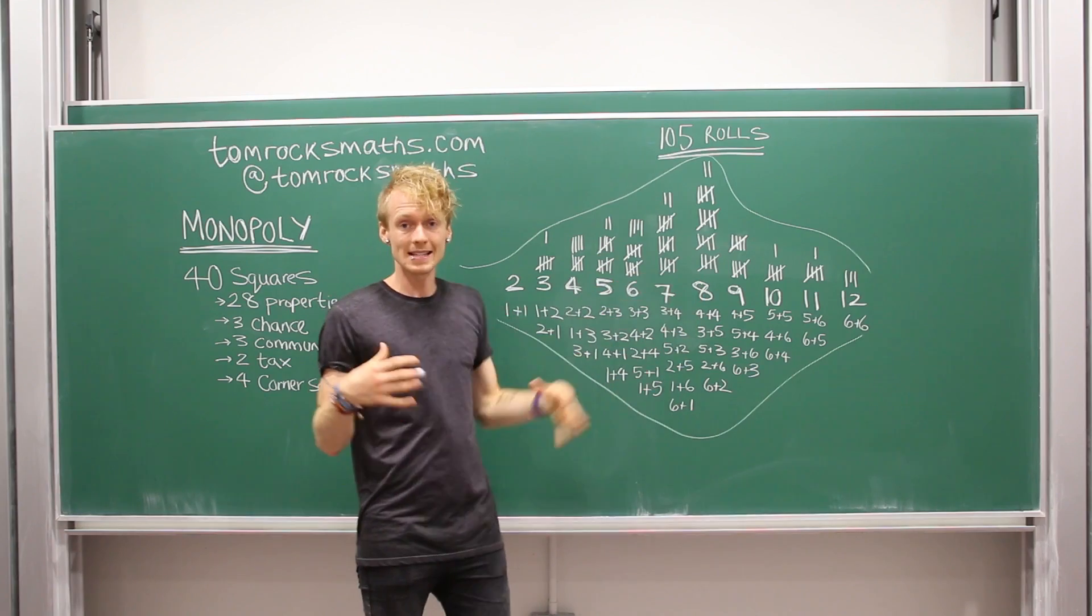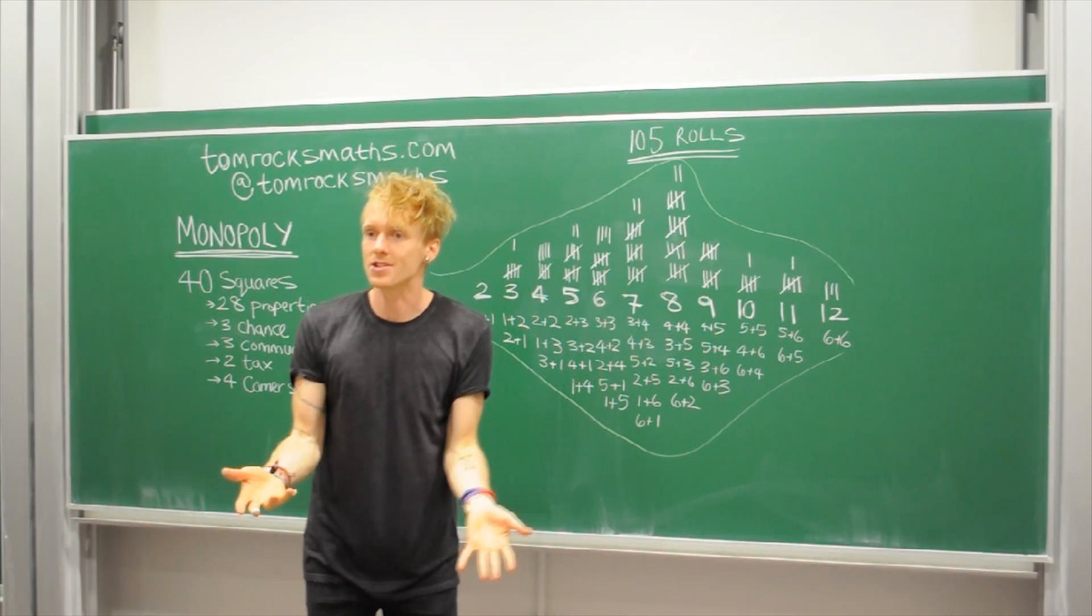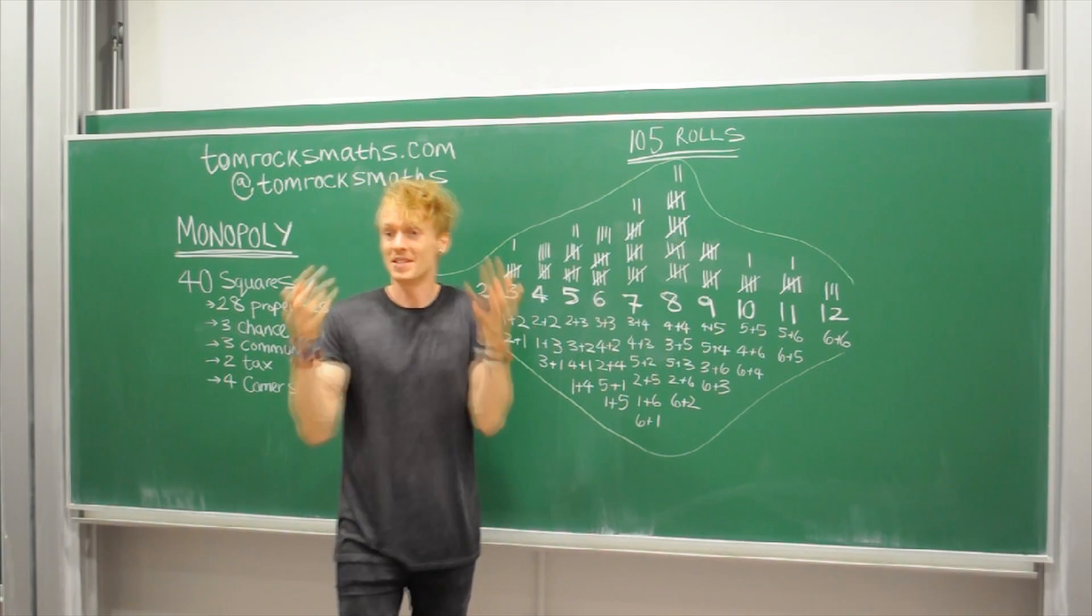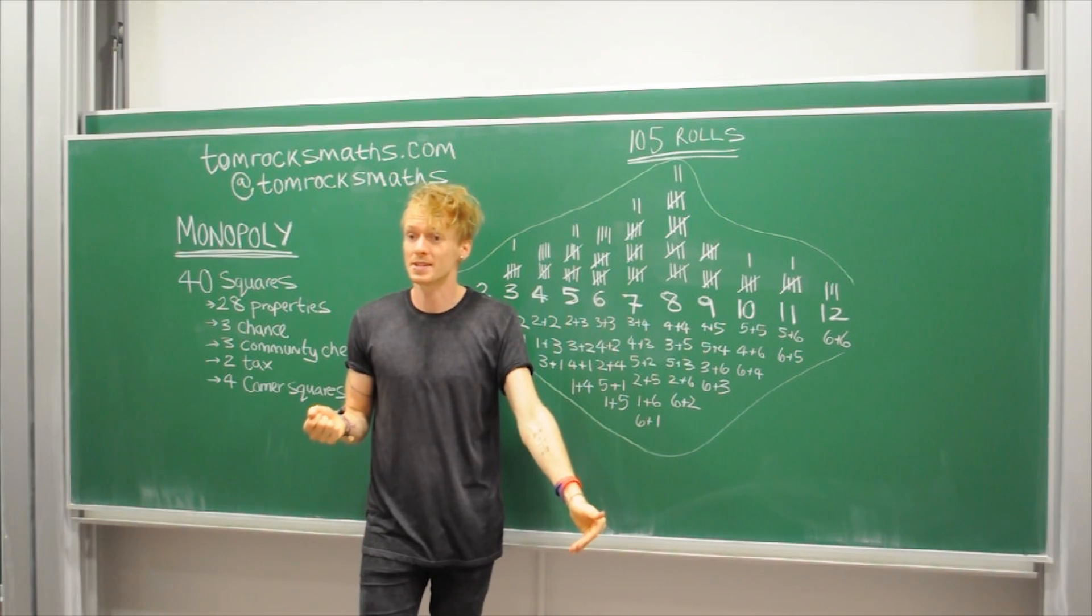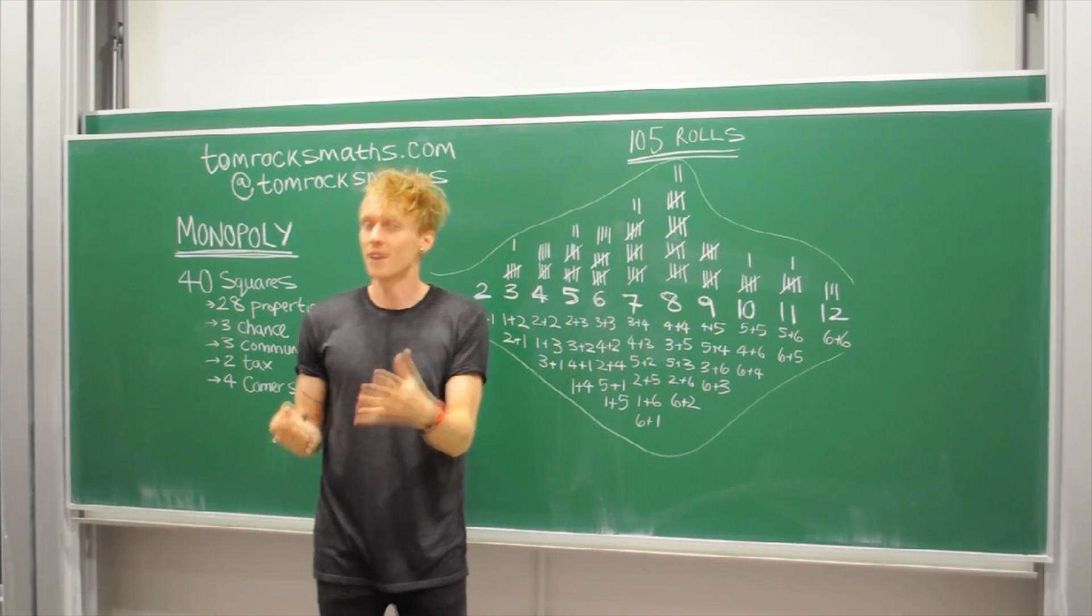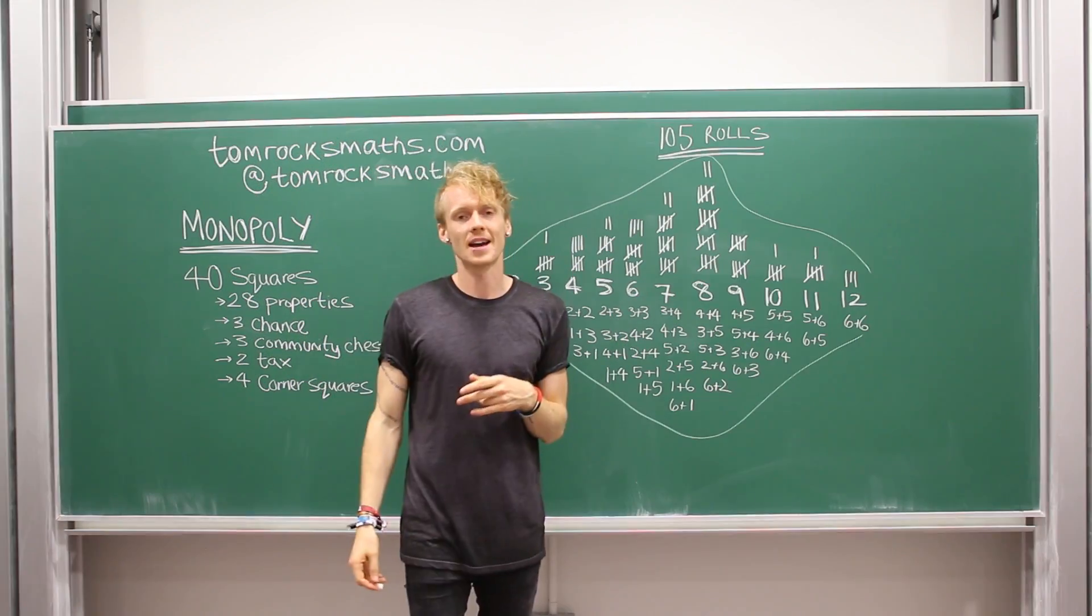And if you move either six or eight spaces from jail you land on the orange properties. Which is great. So six spaces from jail is an orange property. Eight spaces is an orange property.